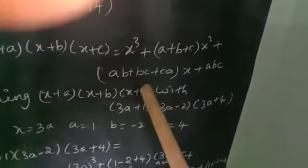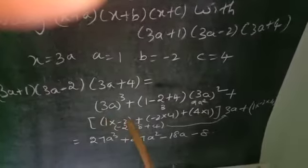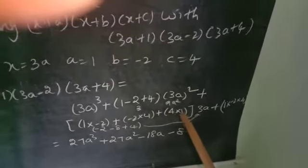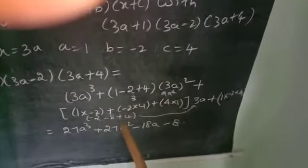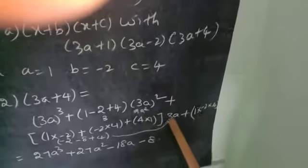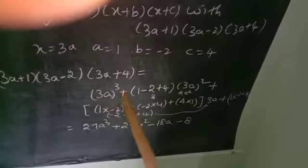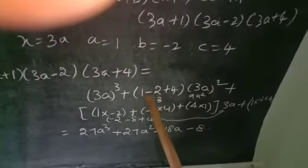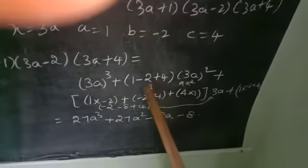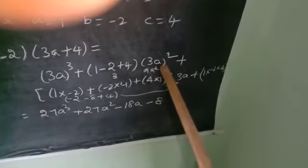Next, ab plus bc plus ca: a into b is 1 into minus 2 equals minus 2. b into c is minus 2 into 4 equals minus 8. c into a is 4 into 1 equals 4. So minus 2 minus 8 plus 4. Now, 3a whole cube equals 27a cube. And 1 minus 2 plus 4 equals 3, so 3 into 9a square equals 27a square.